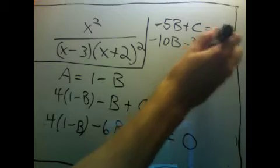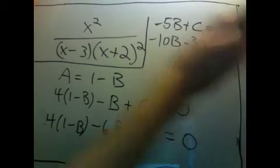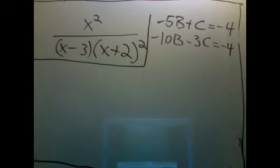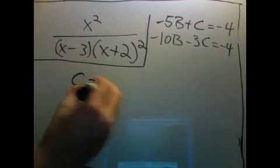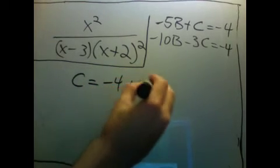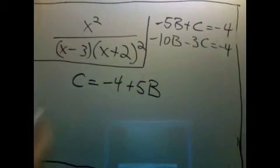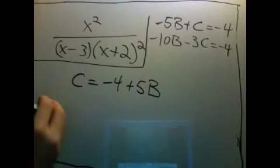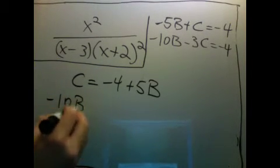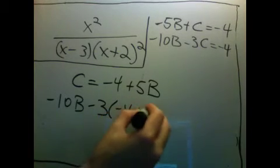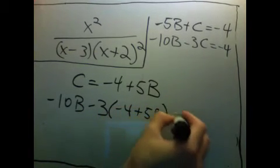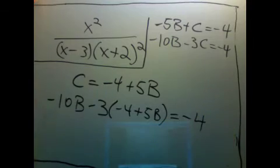And just because it's convenient, I'll solve for c in this one and plug that into the second one. So I get c is negative 4 plus 5b. So negative 10b minus 3c is just this. And that equals negative 4.